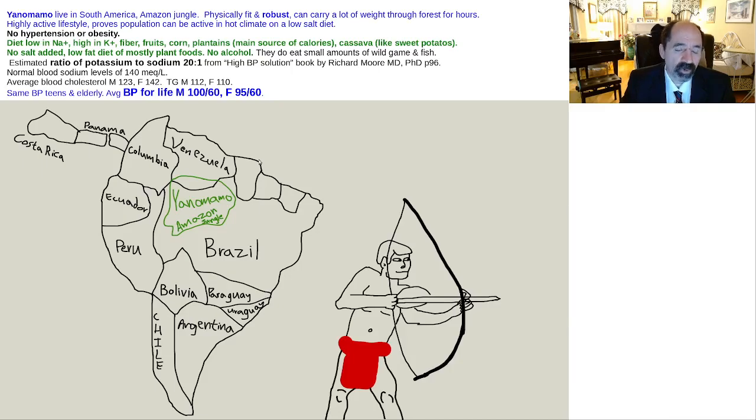In order to have a normal blood pressure, it's estimated you'd want to have at least five times as much potassium to sodium, preferably 10 times as much. On a plant-based diet, that's easy to achieve.